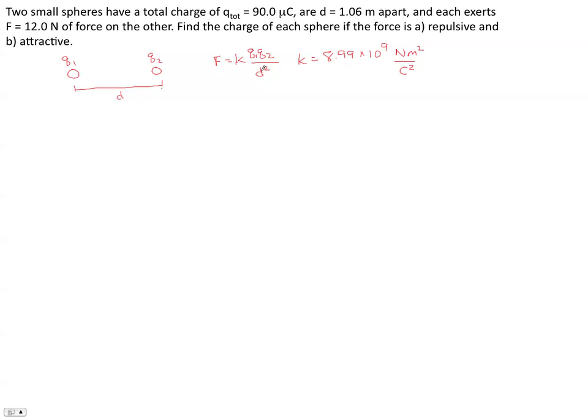We know F, we know k, we know d, but we don't know q1 and q2, so we can't solve for q1 and q2 with only this equation. But what we do know is that q total is q1 plus q2. We can write that equation down.